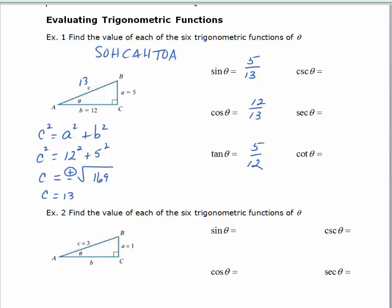Once I have the first three, the next three are just reciprocals of the original. So, the cosecant is 13 over 5, the secant is 13 over 12, and the cotangent is 12 over 5. One thing to remember: it's easy to confuse these reciprocals, because the one that starts with a 'c' — cosecant — is actually the reciprocal of the sine, and the one that starts with an 's' — secant — is the reciprocal of the cosine, which is a little frustrating at first.